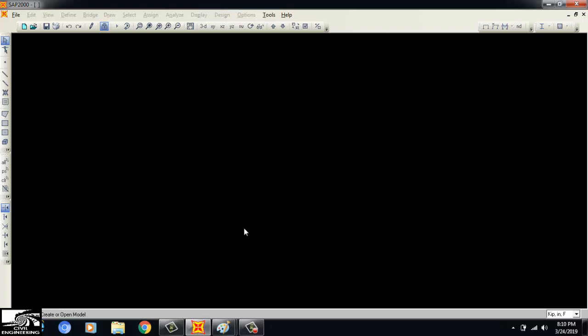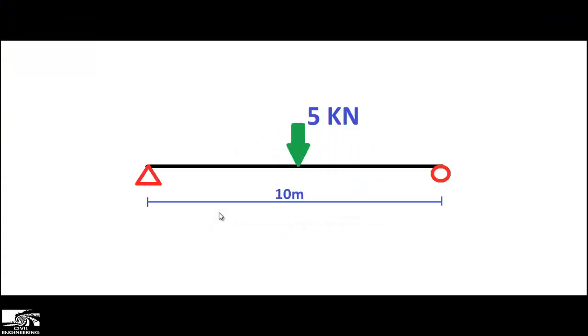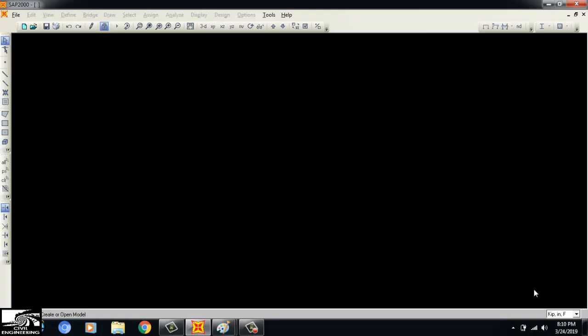Today in this lecture I will do an example showing how we draw a model and how we analyze a simply supported beam. As you can see, the simply supported beam has a length of 10 meters and a load of 5 kN acting at the center. We want to draw the shear force and bending moment diagram using SAP 2000.